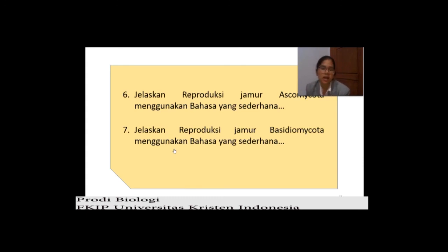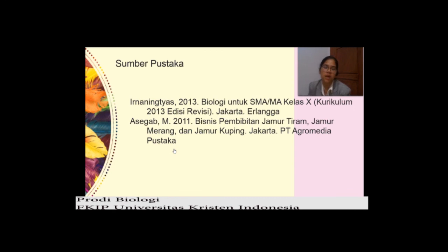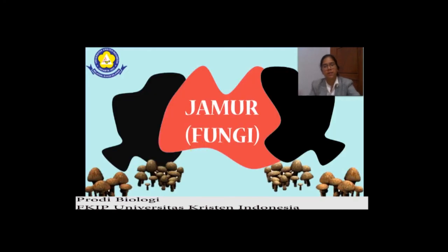Untuk dua soal terakhir ini, kalian boleh tulis di kertas kosong — dibuat sebagai tugas. Yang nomor enam: jelaskan reproduksi jamur Ascomycota menggunakan bahasa yang sederhana. Kemudian yang nomor tujuh: jelaskan reproduksi jamur Basidiomycota menggunakan bahasa yang sederhana. Sumber pustaka saya ambil dari buku Biologi SMA kelas 10 edisi revisi kurikulum 2013, kemudian ada buku Bisnis Pembibitan Jamur Tiram, Jamur Merang, dan Jamur Kuping. Itu saja untuk video kali ini. Jika kalian ada pertanyaan, kalian boleh komen di kolom komentar. Terima kasih.